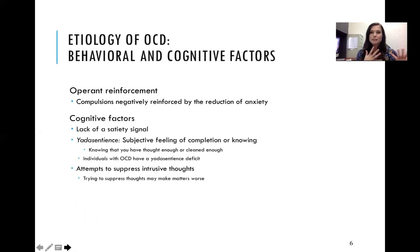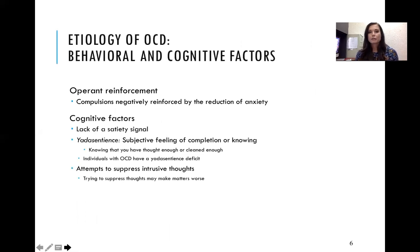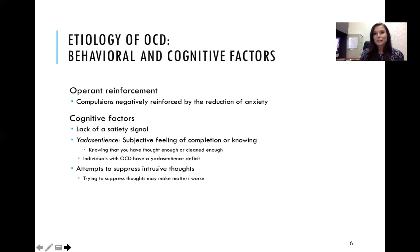Some of the reasons behind obsessive-compulsive disorder include operant reinforcement — compulsions are negatively reinforced by the reduction of anxiety. That behavioral trigger of getting the anxiety reduced continues the cycle of having those compulsions, because the person knows that if they do the compulsion, it helps ease the anxiety.